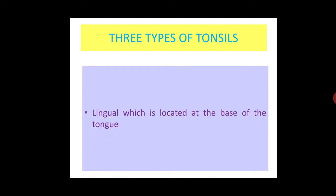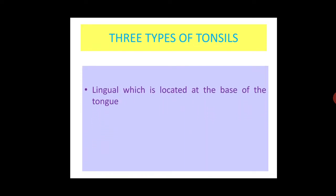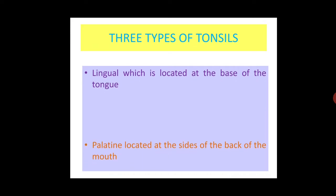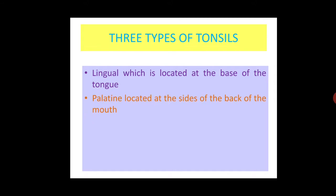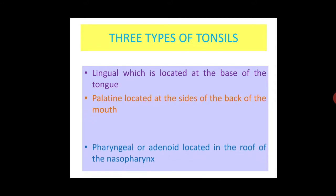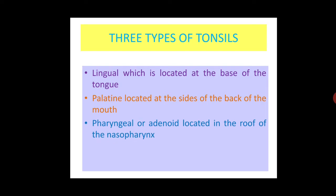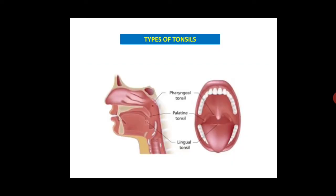Follicles and germinal centers are surrounded by T-cell activity regions. There are three types of tonsils at three different locations in humans: lingual tonsil, palatine tonsil, and pharyngeal or adenoid tonsil. This is a diagram showing the position of tonsils.